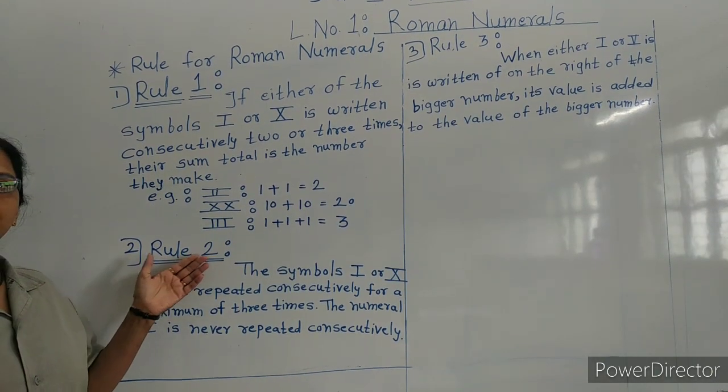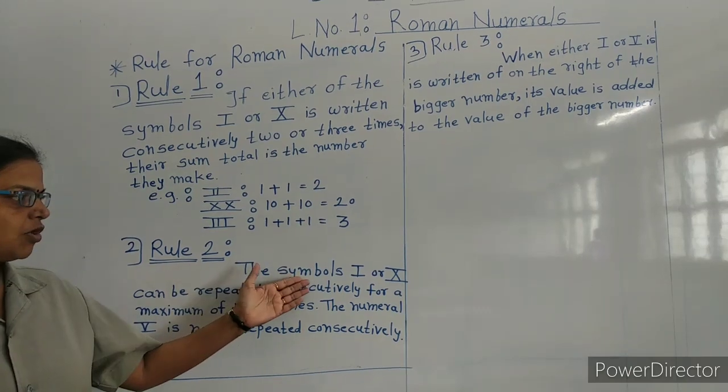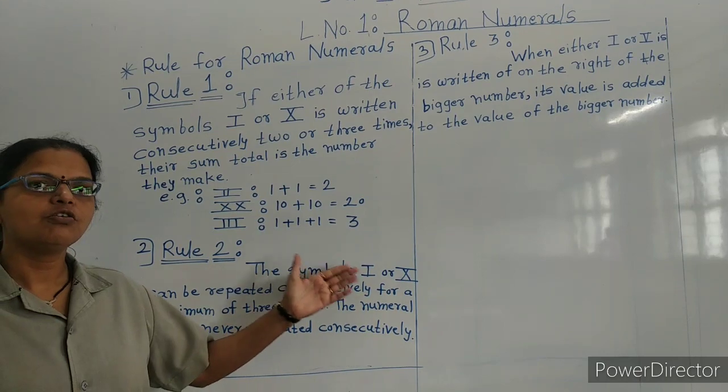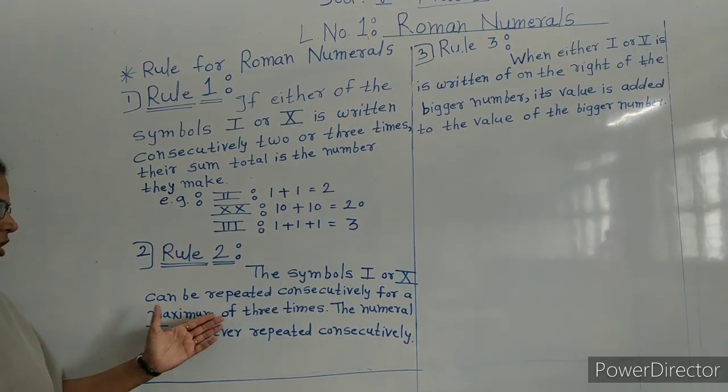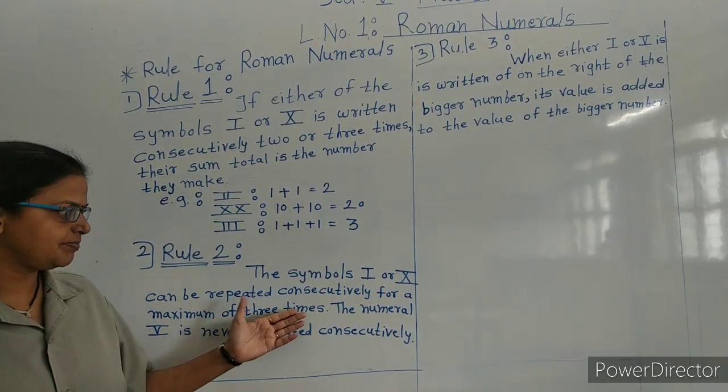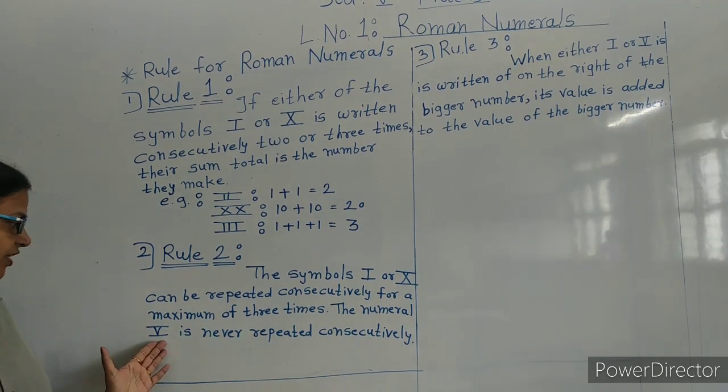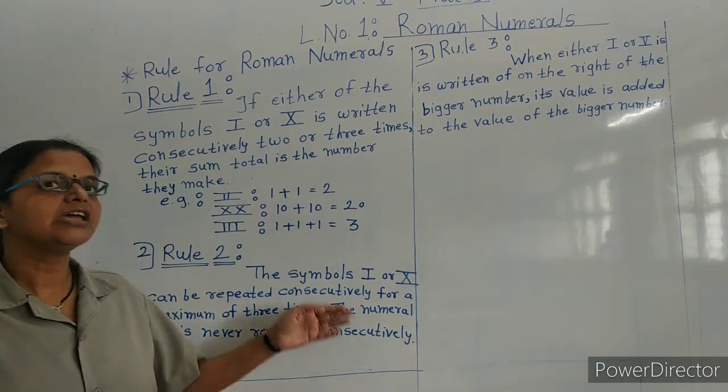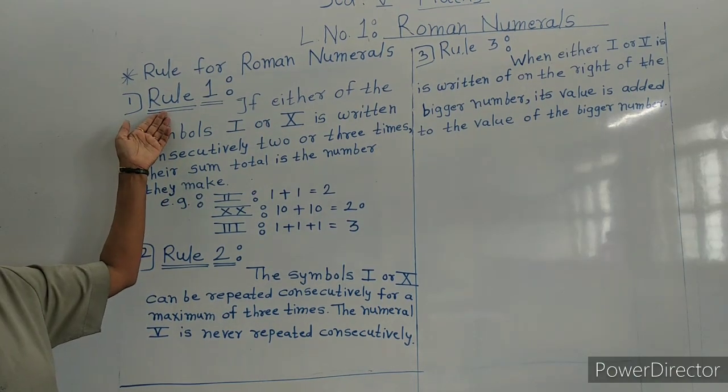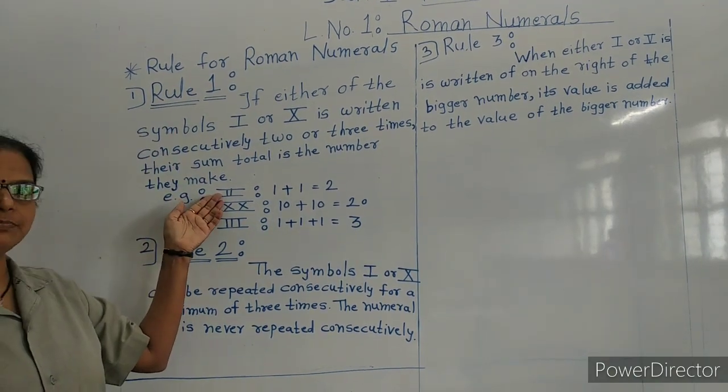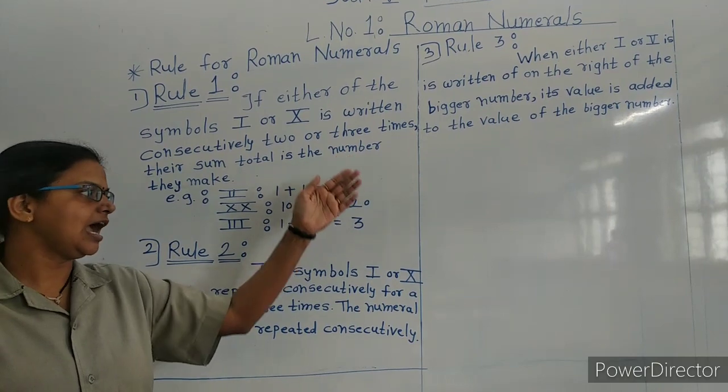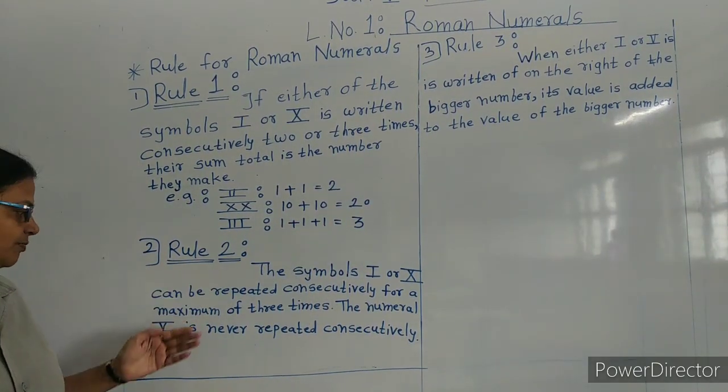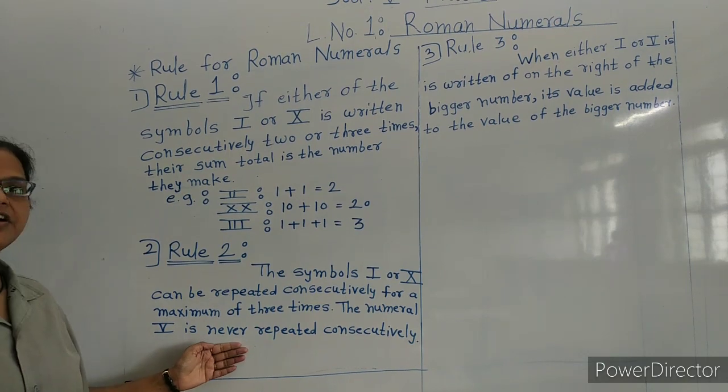Rule 2: The symbols I or X can be repeated consecutively for a maximum of three times. The numeral V is never repeated consecutively. In Rule 1, we have seen I is repeated two times and three times, but in Rule 2, V is never repeated.